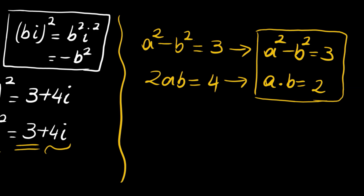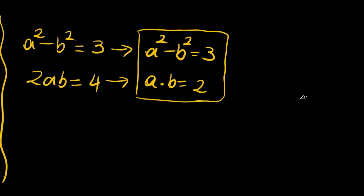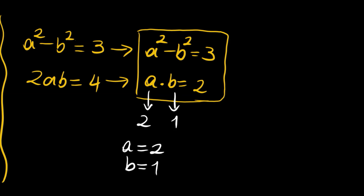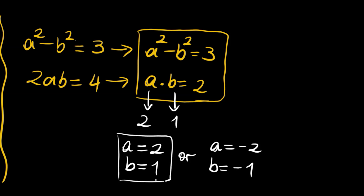The solutions are not too difficult. We have a times b equals 2. By checking: 2 times 1 equals 2, and 2 squared minus 1 squared is 4 minus 1, which equals 3. So a equals 2, b equals 1 is one solution, and a equals negative 2, b equals negative 1 is the other, since the product is again positive and the squares of negative numbers remain positive.